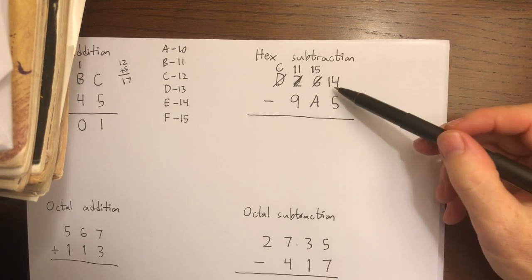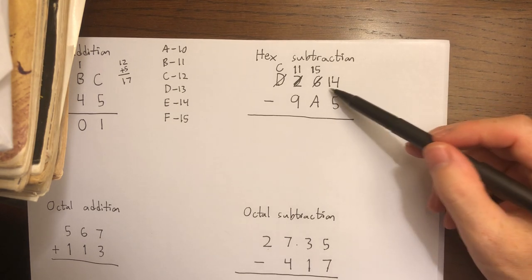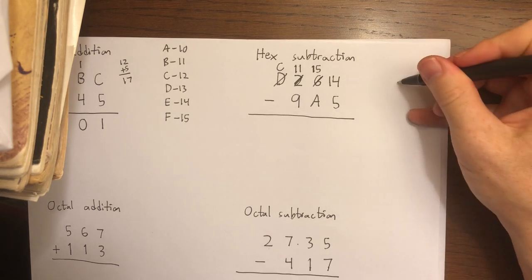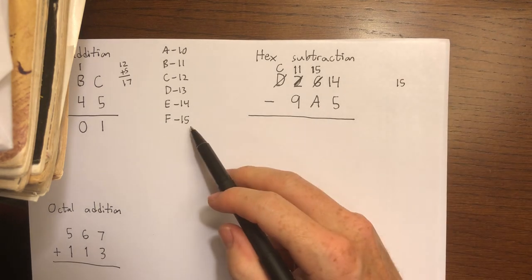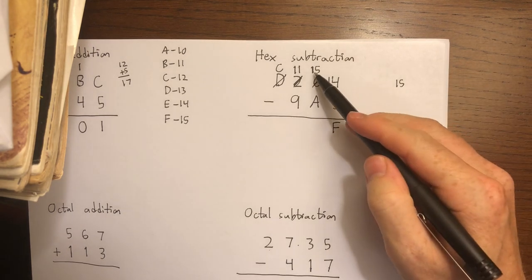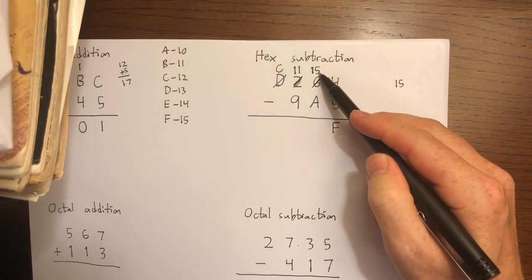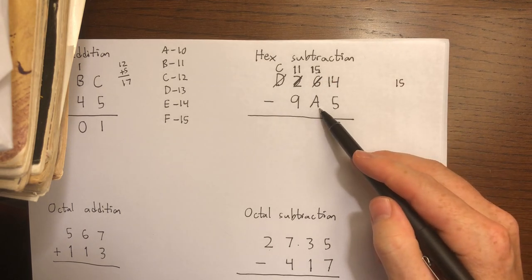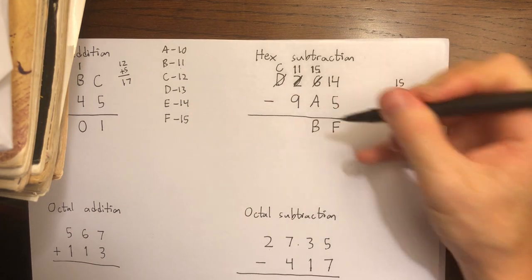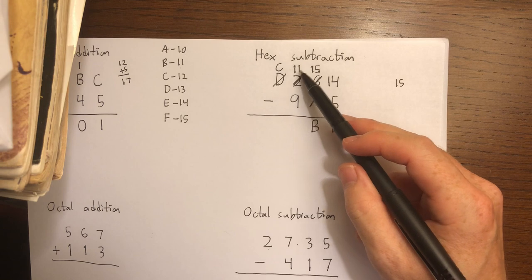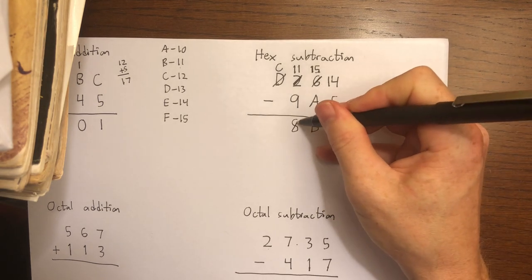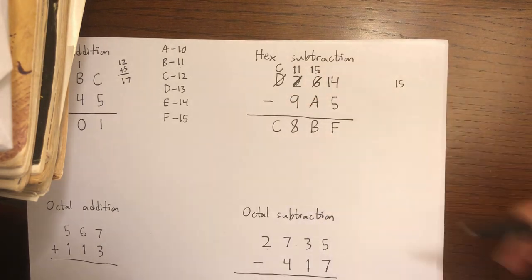14 minus 5 is 9. Wrong. This is hex 1, 4, which in decimal would be 16 plus 4, or 20. So this actually tells me 20 minus 5 is 15. I know that the hex digit for 15 is F. 1, 5 in hex is actually 21 in decimal. 21 minus 10 gives me 11, and I write 11 as a B. 1, 1—that would be 17 in hex minus 9. 17 minus 9 is 8. And finally, C minus nothing gives me C.